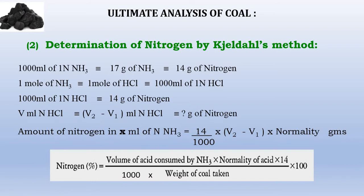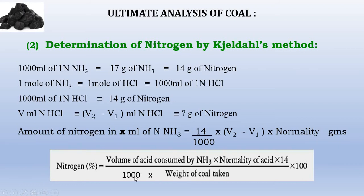One is a blank titration with the total volume of acid titrated against alkali, and the other is a back titration with the ammonia flask titrated against standard alkali. V2 minus V1 — that is blank minus back titration readings — gives the volume of acid neutralized by ammonia. The percentage nitrogen is: (V2 − V1) × normality of acid × (14/1000) × (100 / weight of coal).